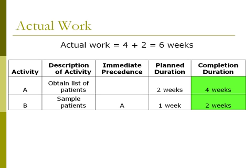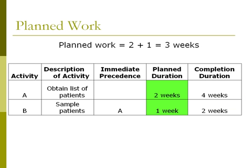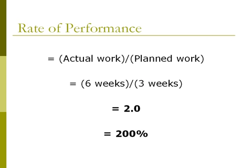For the actual work, we add up the number of weeks for activities A and B in the completed duration column, so it is six weeks. For the planned work, we add up the number of weeks for activities A and B in the planned duration column, which is three weeks. Plugging in those values, we see that the rate of performance is six weeks divided by three weeks, which gives us a rate of performance of 2.0 or 200%.